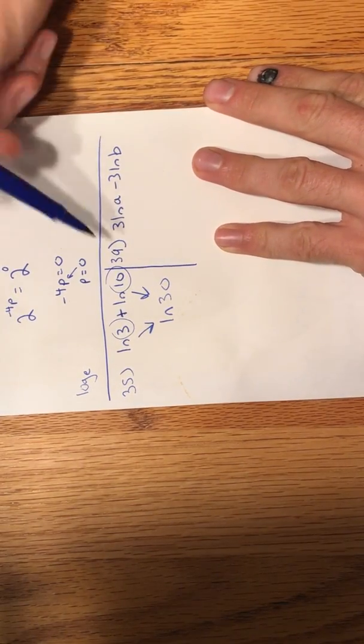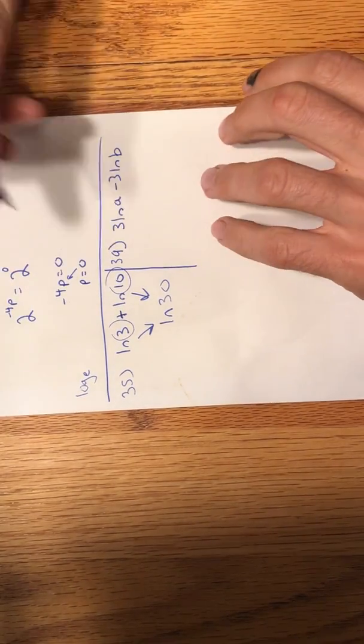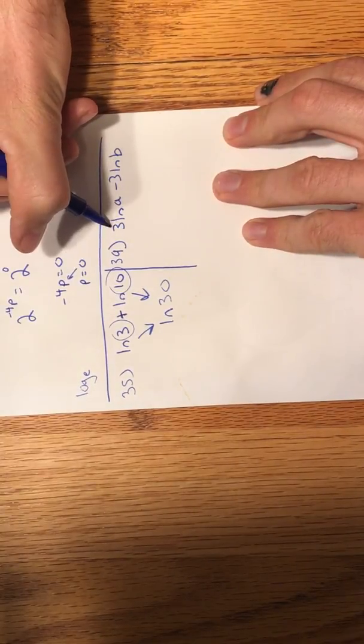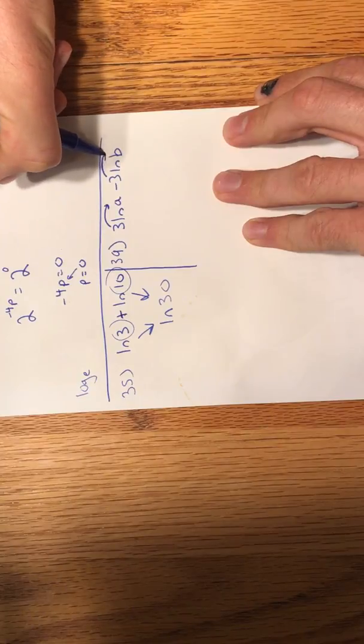So similarly, we have that going on in number 39 with a minus sign, but there's an extra step we want to take care of before that. And that's that there's a 3 in front of the natural log of A, and there's a 3 in front of the natural log of B.